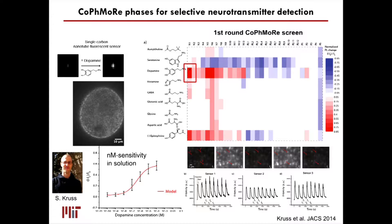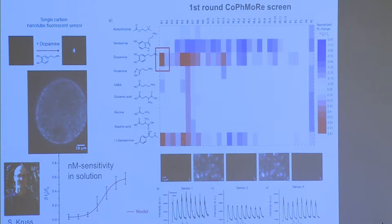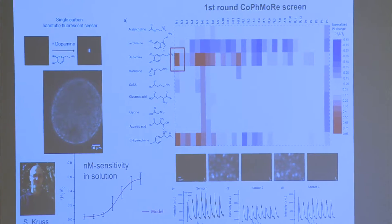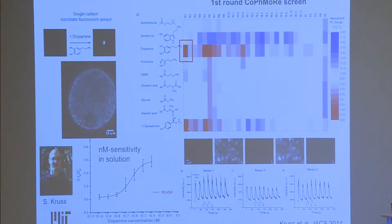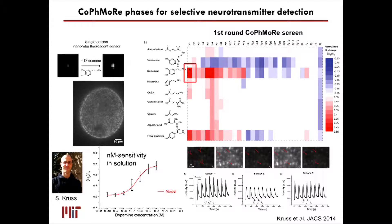We've extended this method to carbohydrates, to proteins. A postdoc, Sebastian Krause, was interested in neurotransmitters. There is no optical reversible sensor for dopamine until our work. This is what a CoFMOR screen looks like — these are neurotransmitters screened against different corona phases, different polymers wrapped around the carbon nanotube. Red is a fluorescence turn-on and blue is quenching. You can see the corona phase strongly regulates which neurotransmitters bind to the surface. We found a really strong turn-on sensor for dopamine — it has some cross-reactivity with epinephrine, but it's the first optical reversible sensor for dopamine.